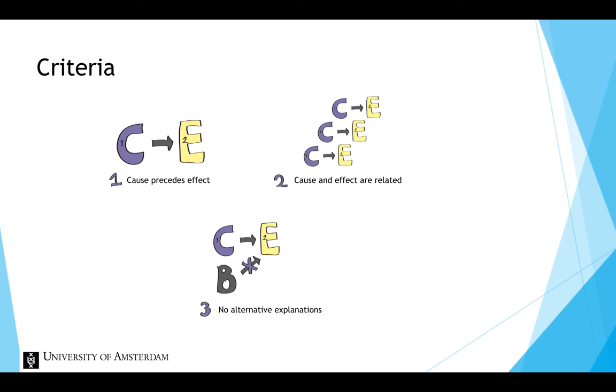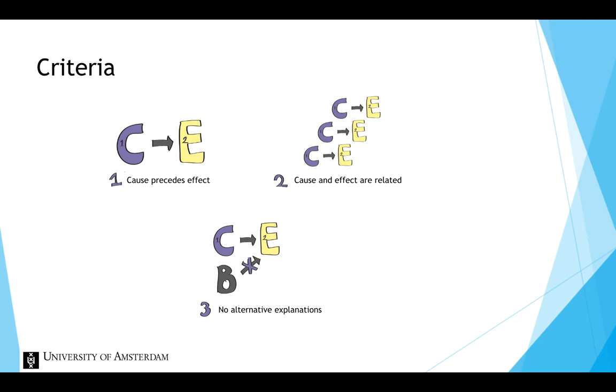Let's go back to the criteria. Loneliness needs to happen before the effect, a decrease in depression. We are able to show this because we control the presence of the cause, loneliness. Second, the cause and effect should be related. Suppose we found an effect of loneliness on depression. So less loneliness goes together with lower depression. Then we have showed that if the cause is absent, the effect does not occur.